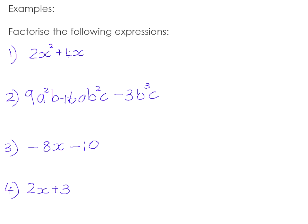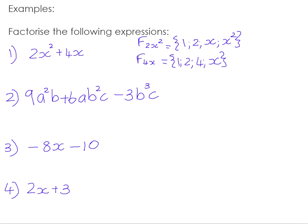Our two terms are 2x squared and 4x. The factors of 2x squared are 1, 2, x, and x squared. The factors of 4x are 1, 2, 4, and x. Note that x squared is not a factor of 4x because x is only a factor of x — you can't divide x by x squared exactly. Looking at the numeric parts, the highest number common to both lists is 2, and the highest power of the variable common to both is x. So 2x is our common factor.